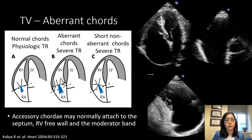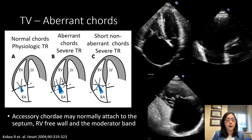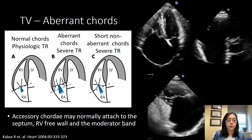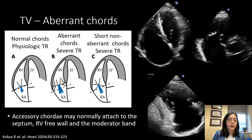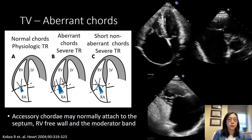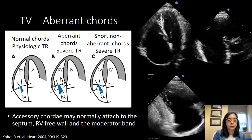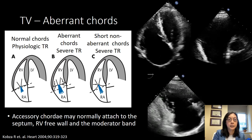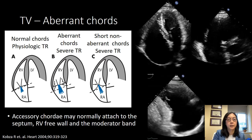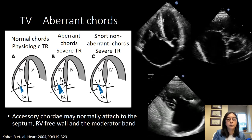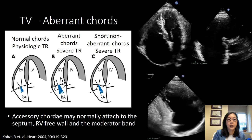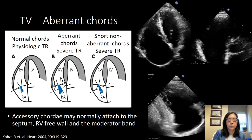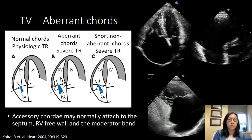The tricuspid valve may have normal as well as aberrant cords. Normal cords are attached at the edge, and accessory cords can also be seen attached to the septum, free wall, and moderator band. Aberrant short cords can lead to severe tricuspid regurgitation; these cords are generally attached to the body of the leaflet and displace the jet from the annular plane into the right ventricle. Short non-aberrant cords attached to the edge of the leaflets can also result in tethering and displacement of the jet into the right ventricle.